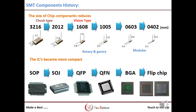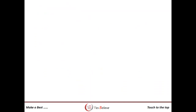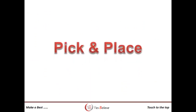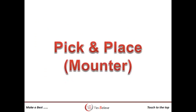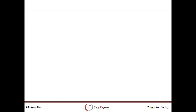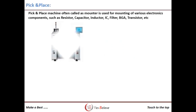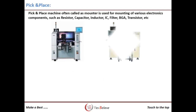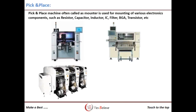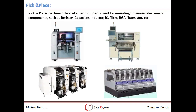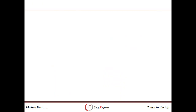The next improvement in the SMT process will be full automation. Having learned the SMT basic process and the use of pick and place machines along with machine improvement history, let's now learn about the machine in detail. The pick and place machine, also known as a mounter, is used for mounting chip components — that is RLC — as well as IC class components on the PCB.